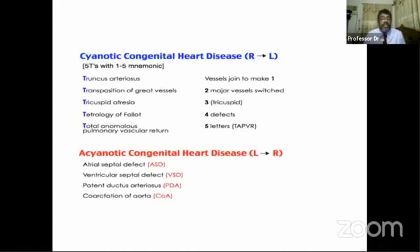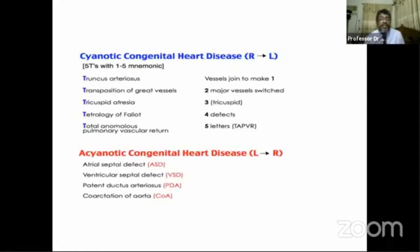Tetralogy of Fallot is the cause here. When there is a left-to-right shunt, there is no mixing of oxygenated and deoxygenated blood, so cyanosis does not develop. Left-to-right shunt conditions — atrial septal defect, ventricular septal defect, PDA, and coarctation of the aorta — are the four common non-cyanotic congenital heart diseases.